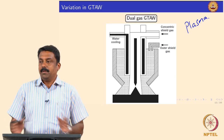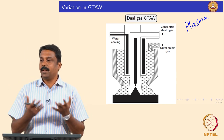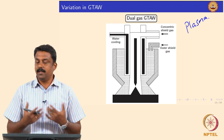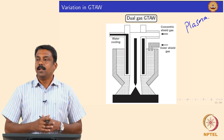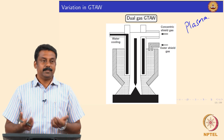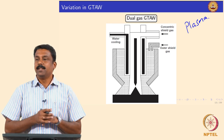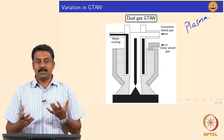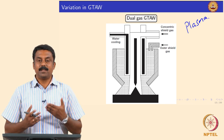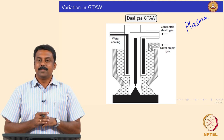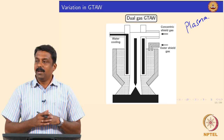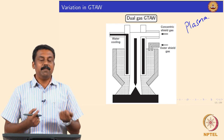One way of doing it is to increase the current, keep on increasing it to a maximum level. But that is disadvantageous because then you will also increase the heat input. The other way is to carefully manipulate the heat transfer characteristics of the arc. Heat transfer in arc is carried out by three ways: conduction, convection, and radiation. Conduction and radiation we cannot modify, but we can manipulate the convective heat transfer.